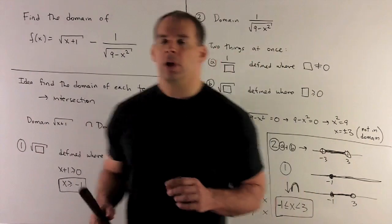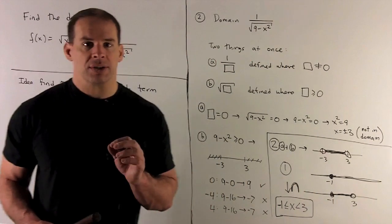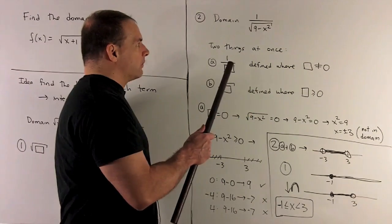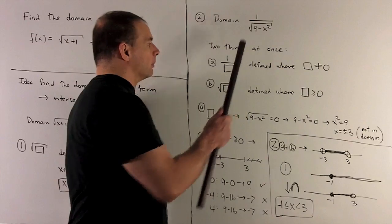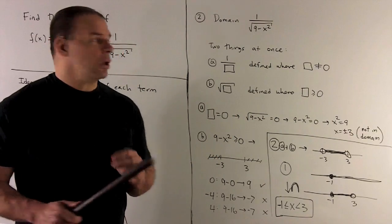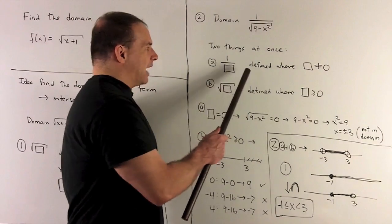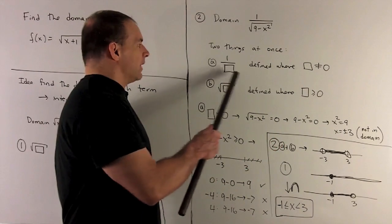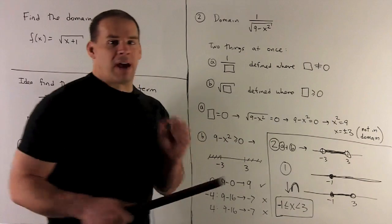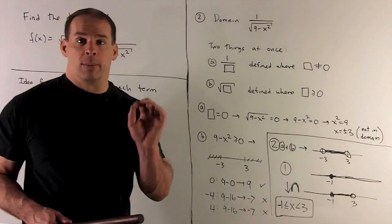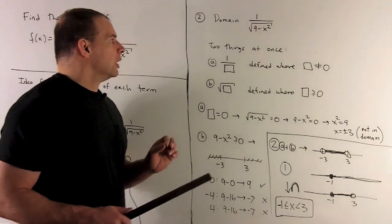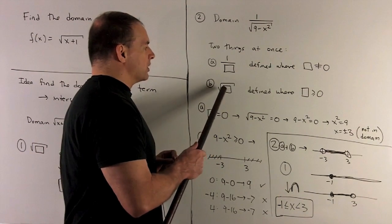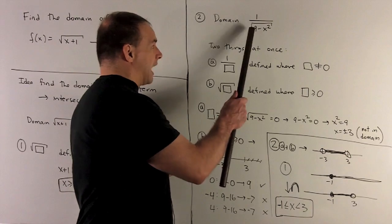For Term 2, we're going to have two things going on at once. First, we have to worry about division by 0: 1/box is defined where box is not equal to 0, so we take the denominator, set it equal to 0, find those points, and throw them away from our final answer. Second, we need to know where √(box) is defined — box here is 9-x².